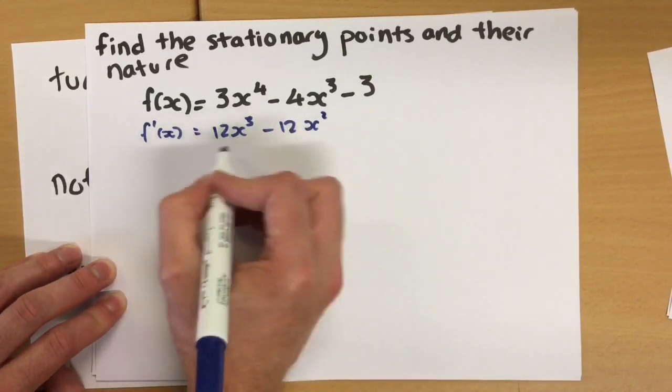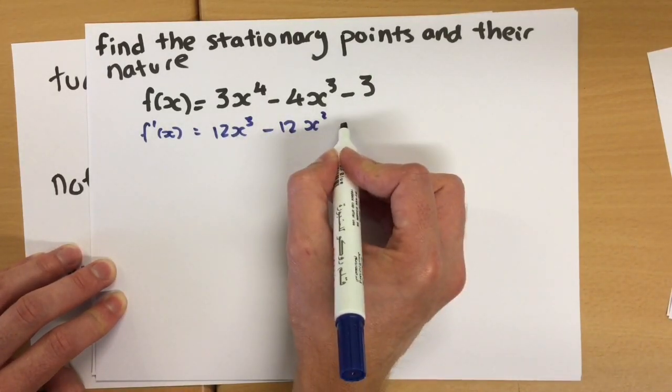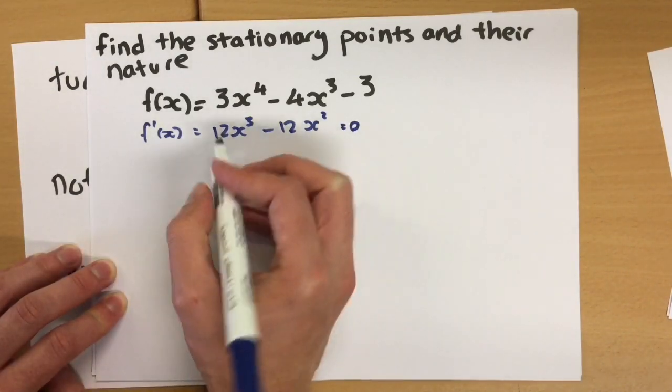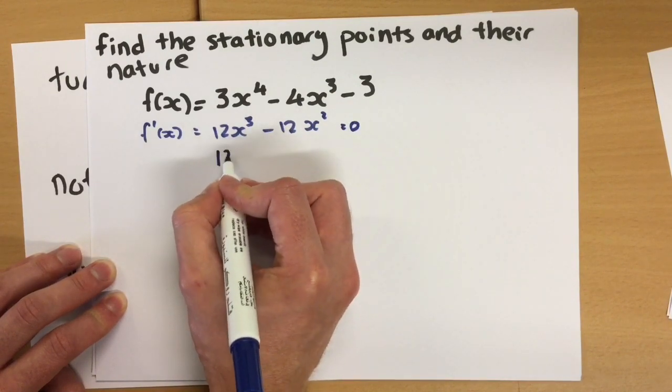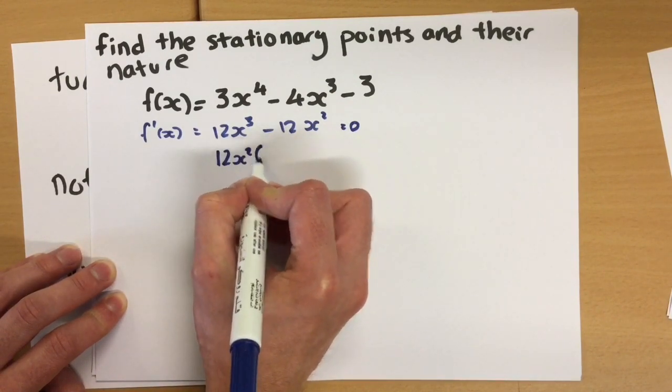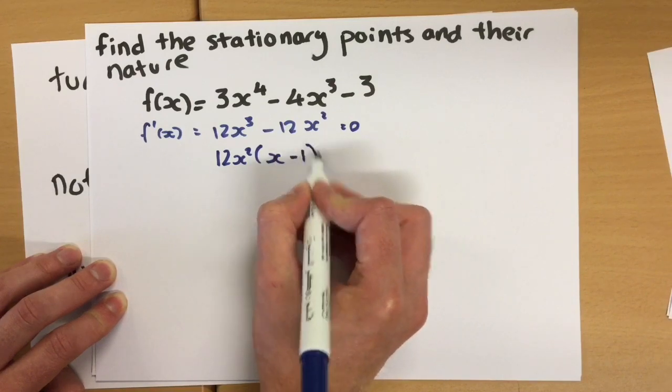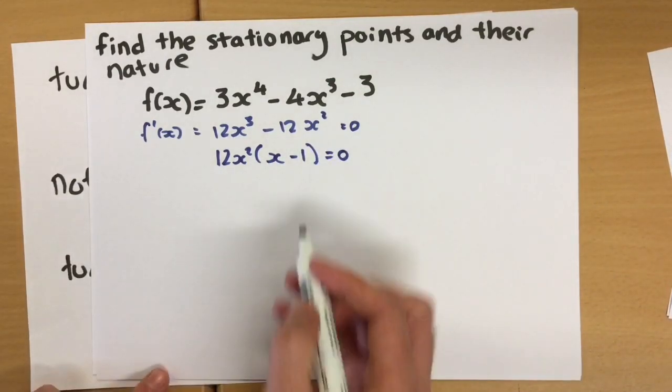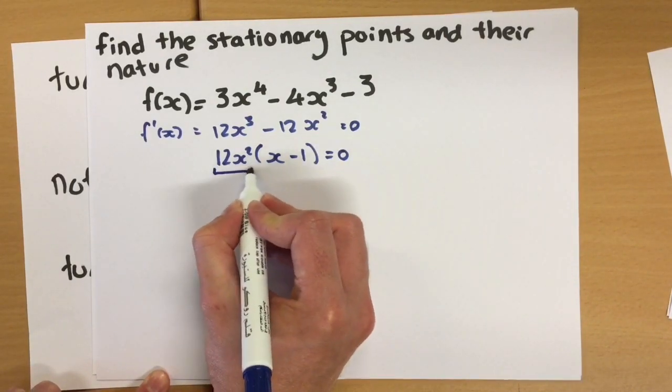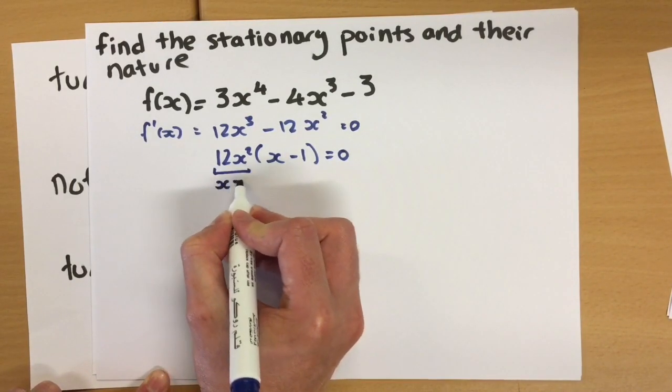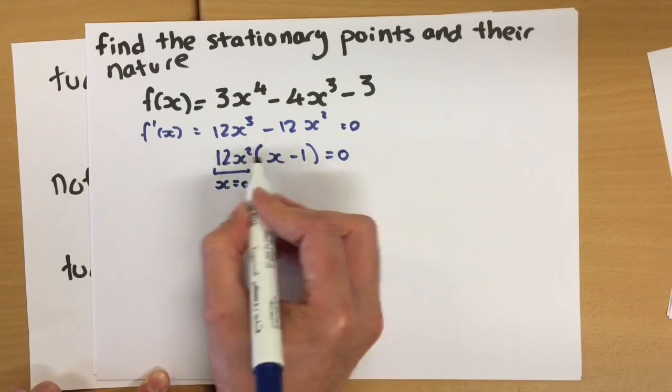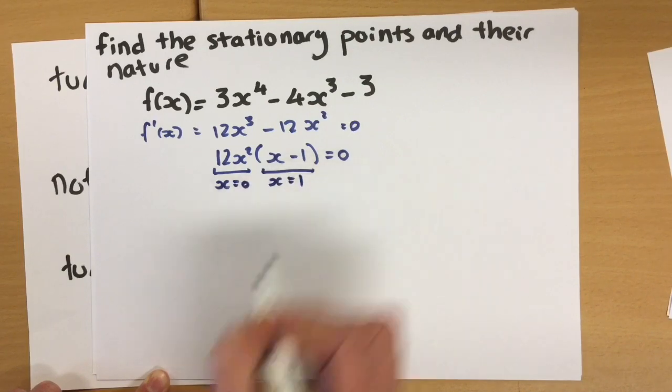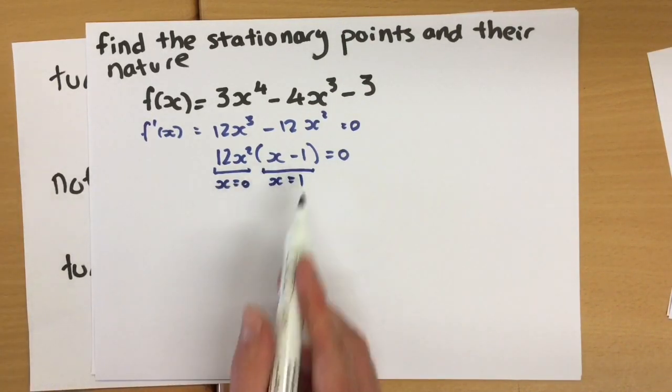Let's just factorize this. So when this equals zero, it's going to be a stationary point. So you can factor it together, take out 12x squared, x subtract 1. So our two stationary points are here, when x must be zero, because zero times anything is zero. Or here, when x is 1. So there are two stationary points.